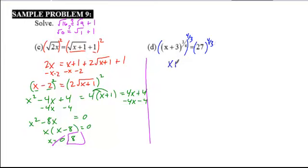The 3/4 and 4/3 cancel, leaving just the expression x + 3. The denominator of 3 in a rational power means a cube root, so the cube root of 27 is 3, and 3 to the fourth is 81. Subtract 3 from both sides, we get x = 78.